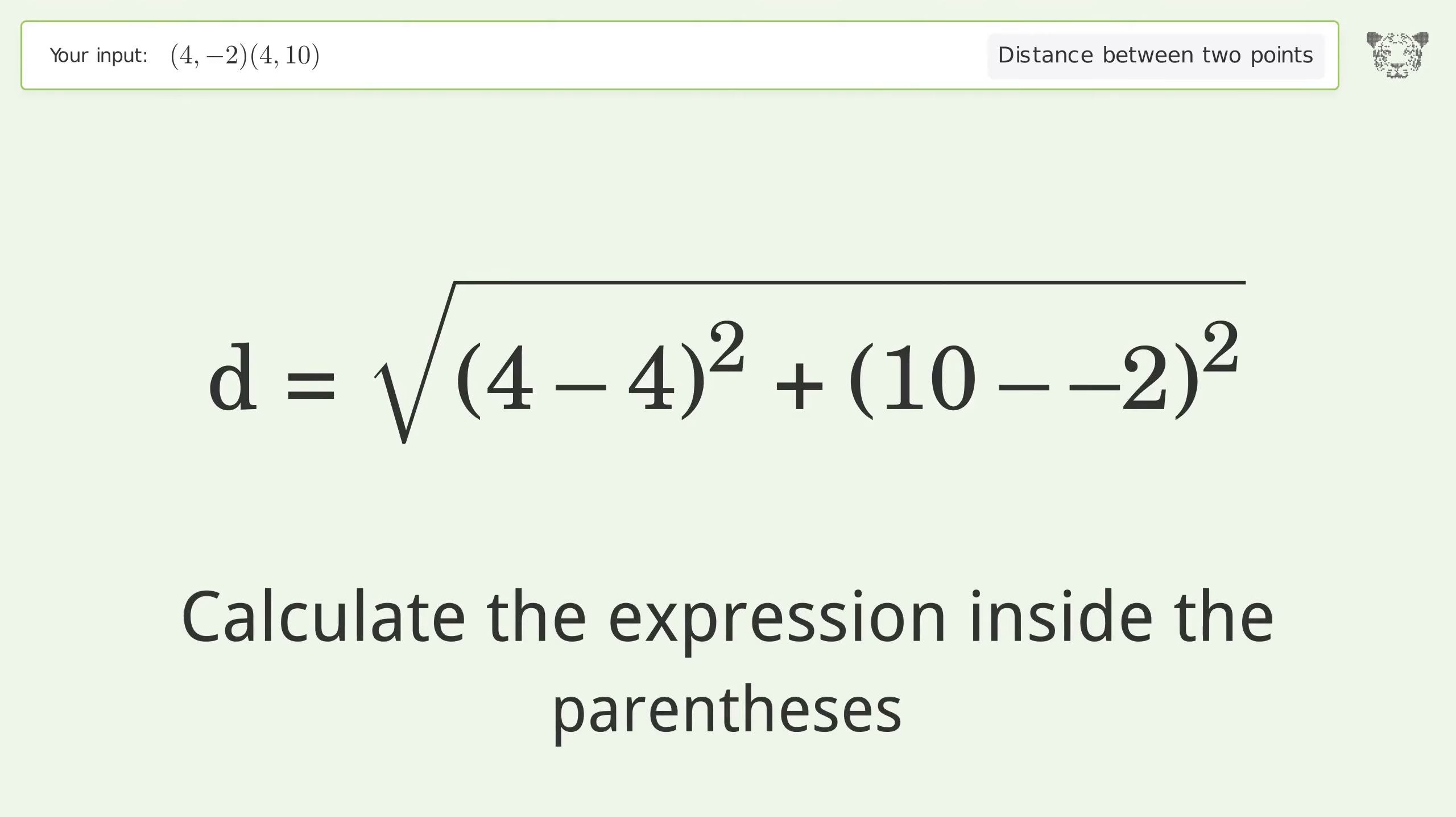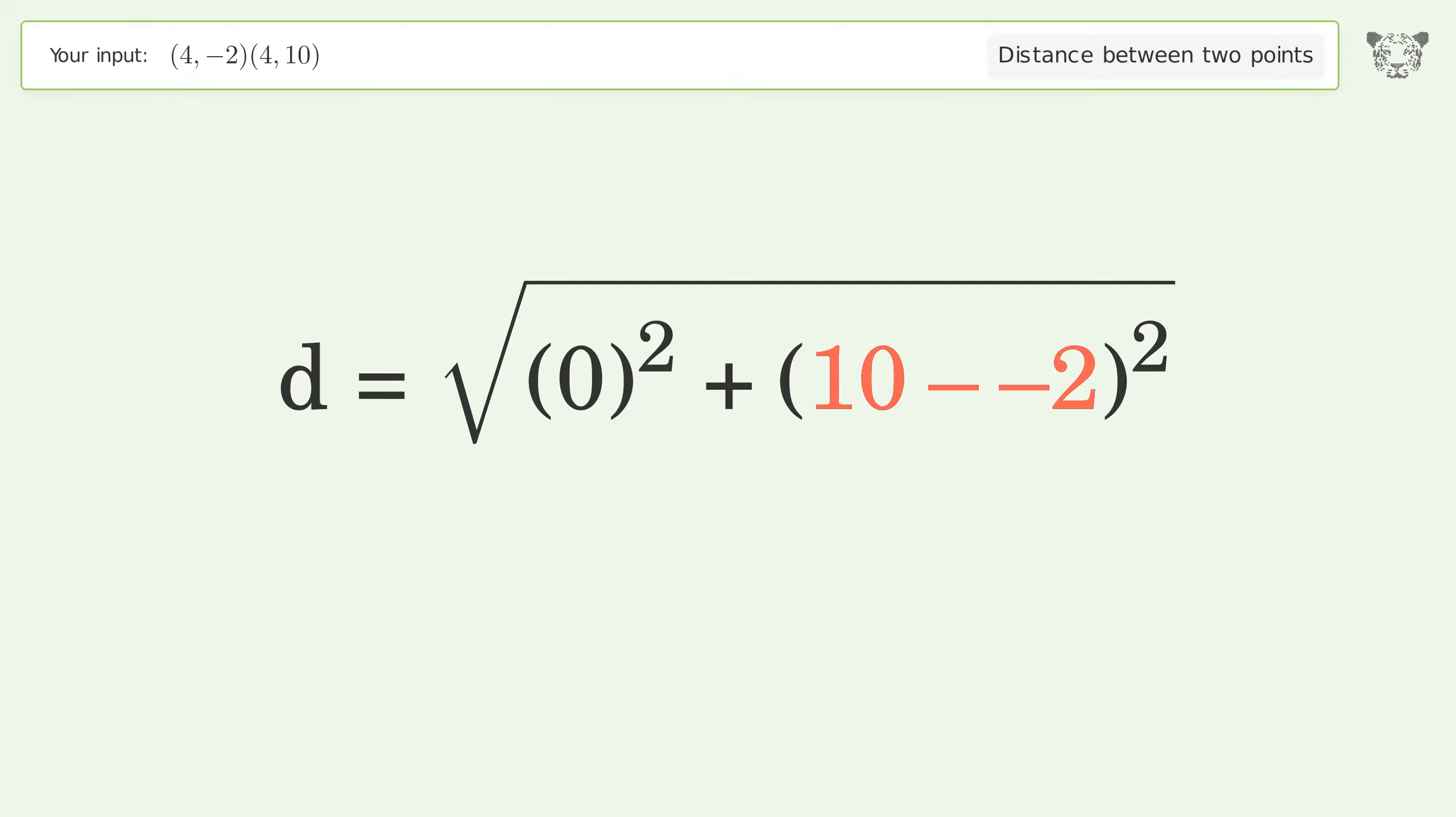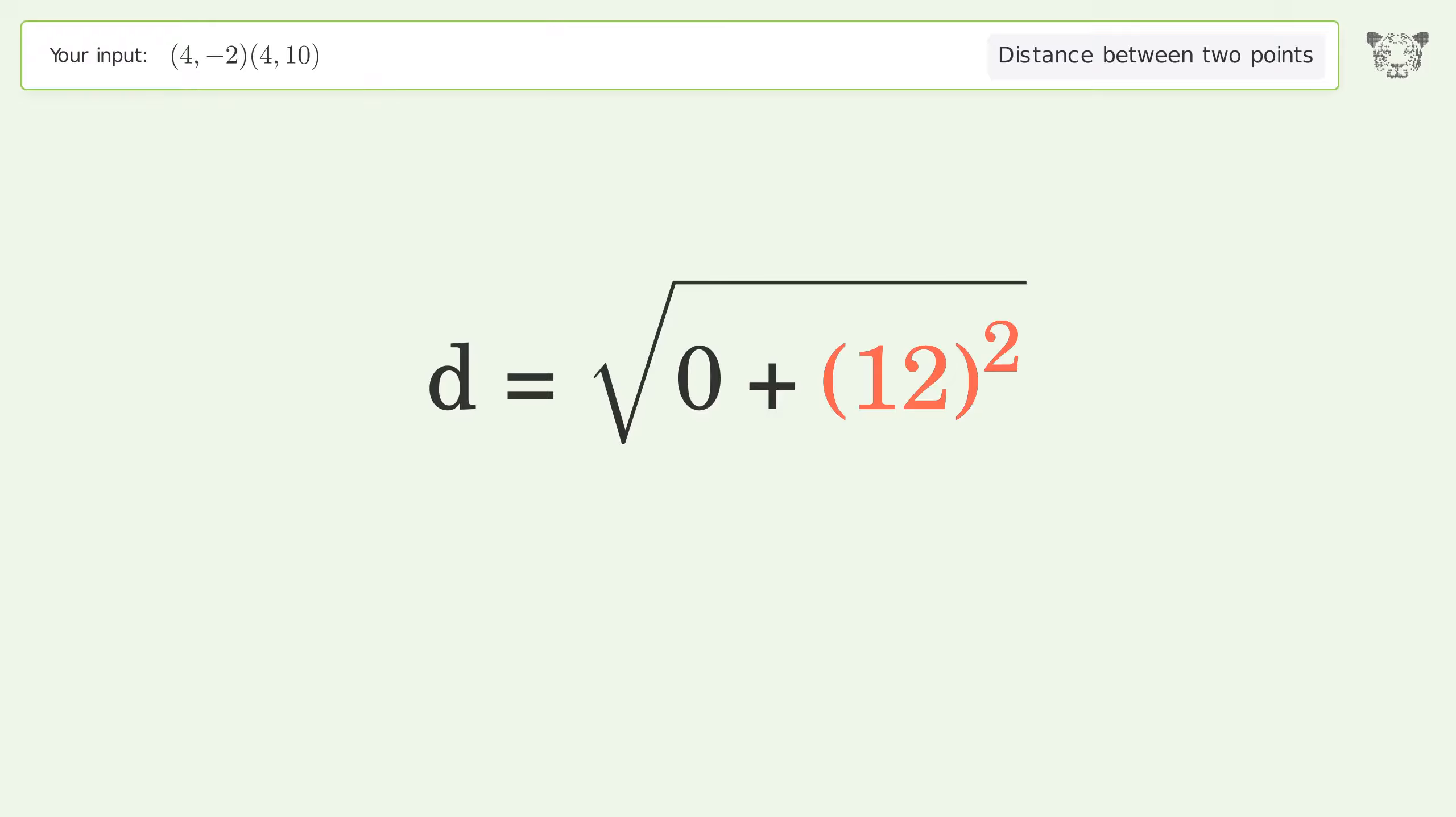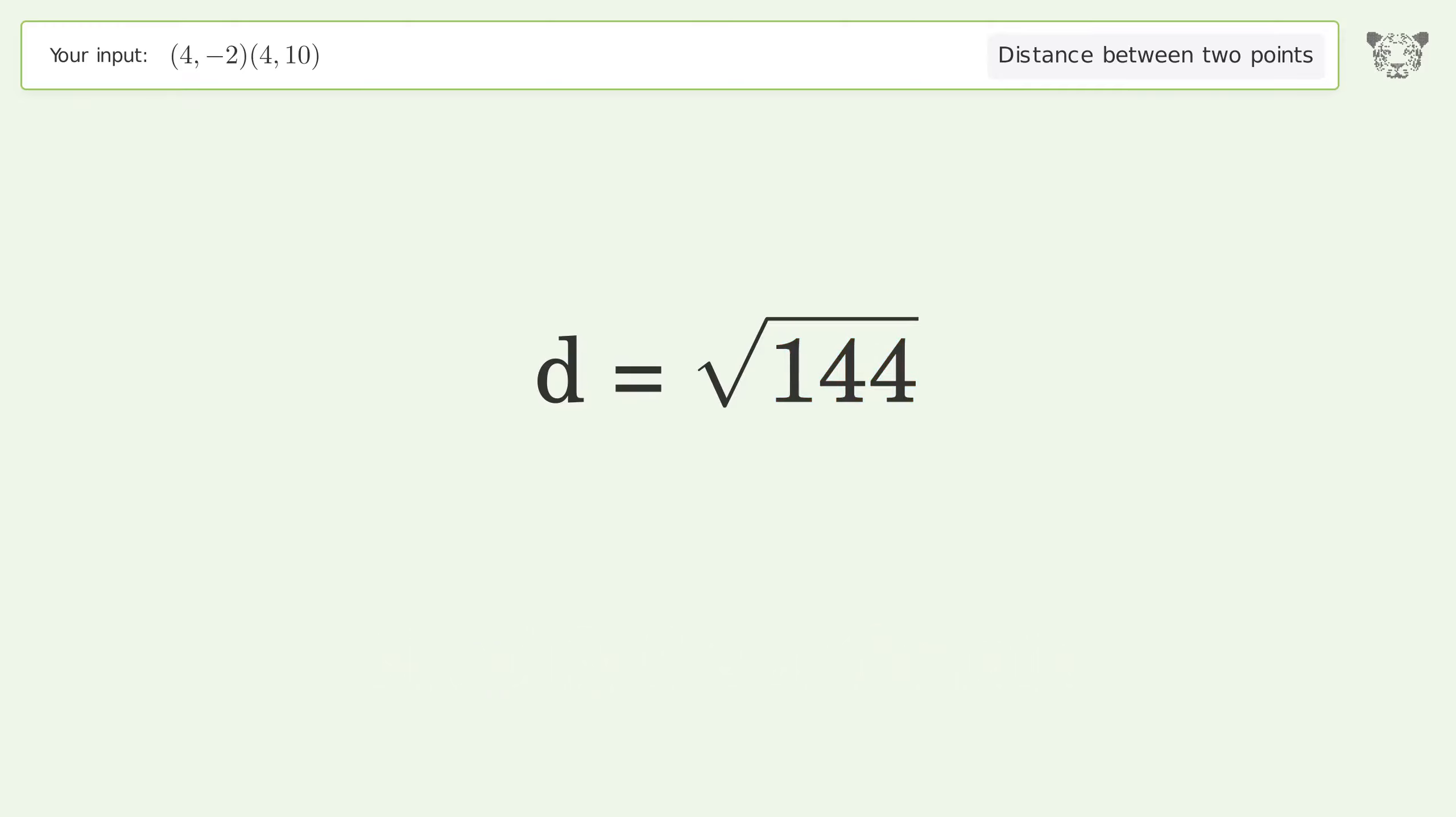Calculate the expression inside the parentheses. Simplify numbers raised to exponents. Simplify the arithmetic. And so the distance between the two points is the square root of 144 or 12.